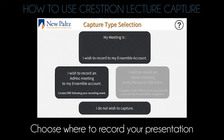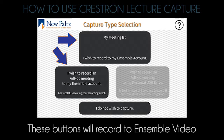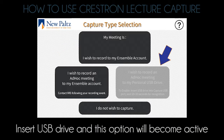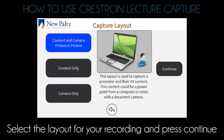Choose where to record your presentation. These buttons will record the ensemble video. Insert a USB drive and this option will become active. Select the layout for your recording and press continue.